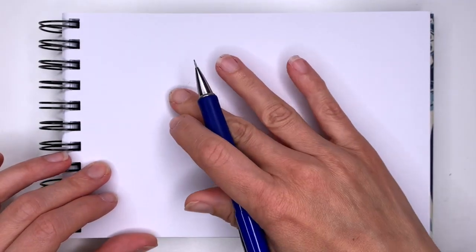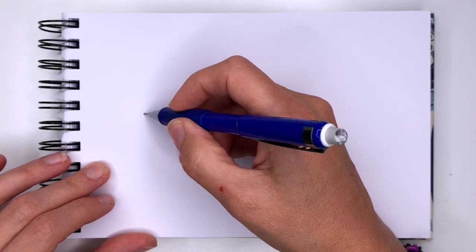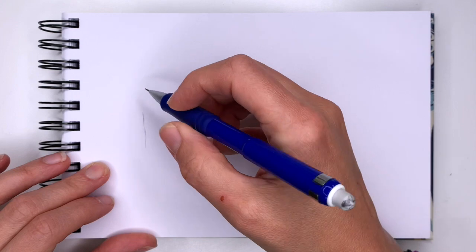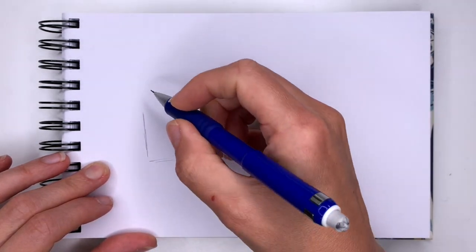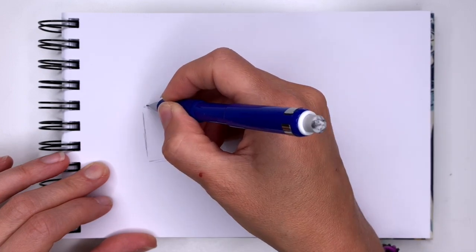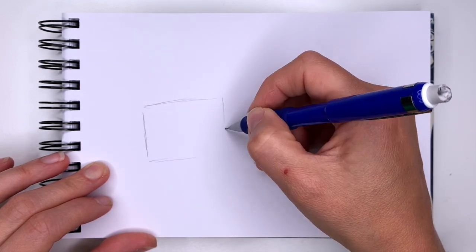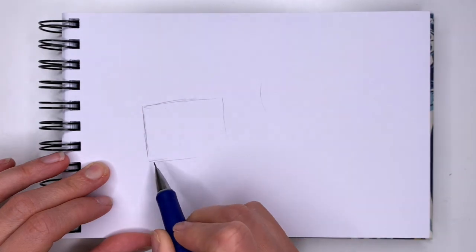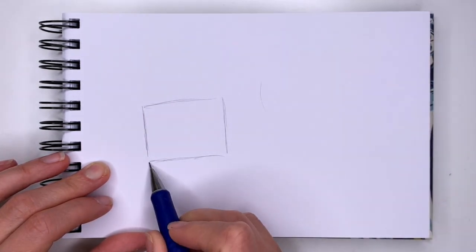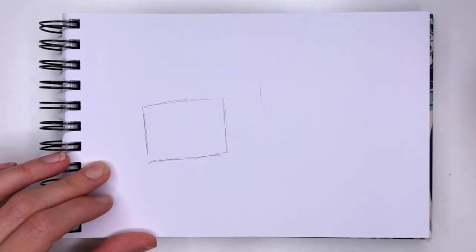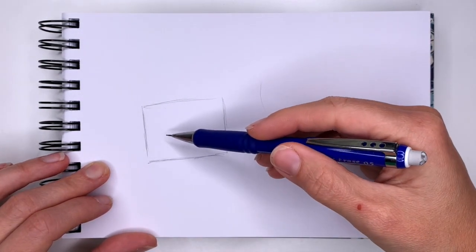The first cuff we're going to draw is going to be like a regular cuff with a button and then we're going to put ruffles on it. So we will begin by drawing a rectangle. Draw it lightly for now. Once you have your rectangle, so the rectangle is your cuff,